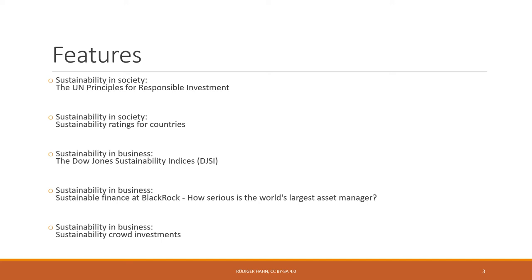There are three features on sustainability in business. The first is about the Dow Jones Sustainability Index, which sums up investments in company stocks rated according to certain sustainability criteria. The second is about BlackRock — the large investment firm — examining sustainable finance at BlackRock and how serious the world's largest asset manager is with its sustainability efforts.